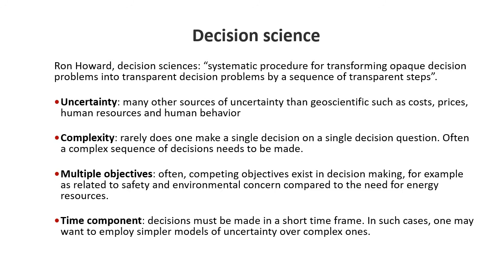Often we have multiple competing objectives, and this is frequently related to risk and return. For example, we can produce our earth resources to maximize profit, but we also have to be concerned about the environment and minimize environmental impact. There's also a time component in decision making — both a short-term and a longer-term time framework that we have to consider.